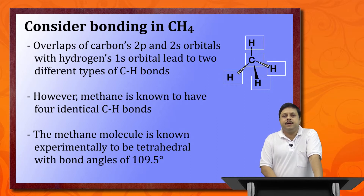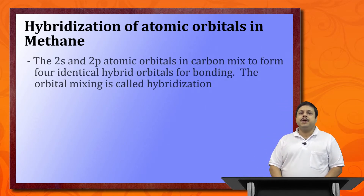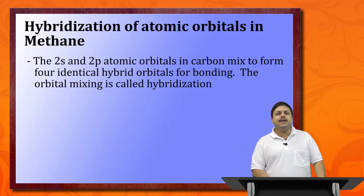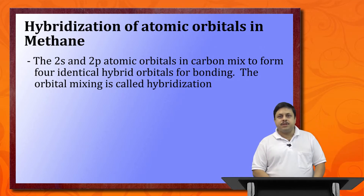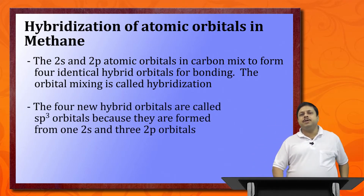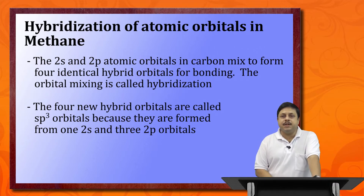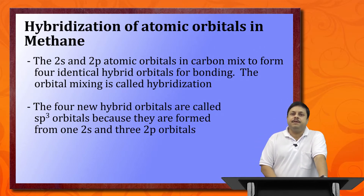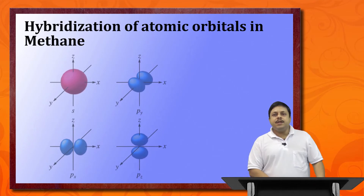Hybridization in methane involves the 2s and 2p atomic orbitals of carbon mixing to form four completely identical hybrid orbitals. The process of mixing these orbitals is called hybridization. We end up with four sp3 hybrid orbitals formed from one 2s and three 2p orbitals. The total number of atomic orbitals mixing equals the total number of hybrid orbitals formed. These four sp3 hybrid orbitals are identical in shape and occupy a tetrahedral geometry in three-dimensional space.